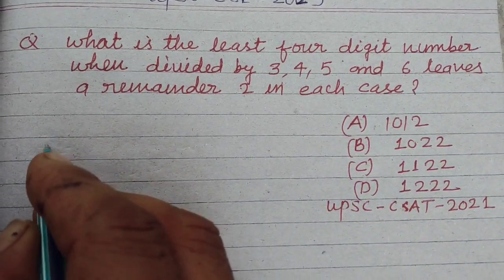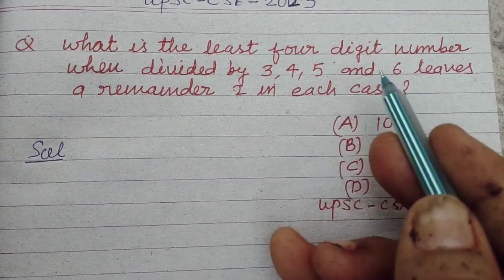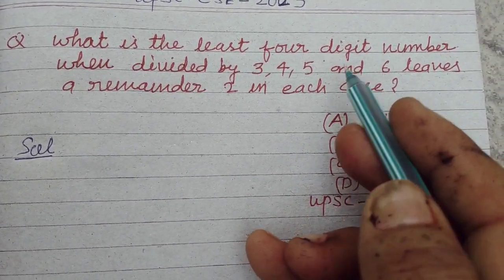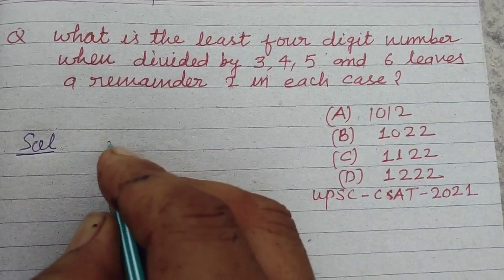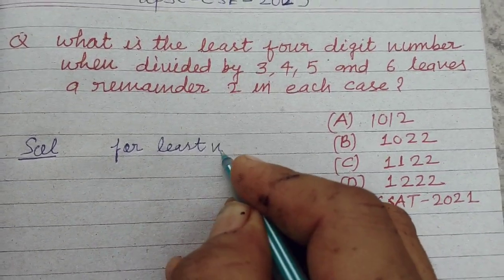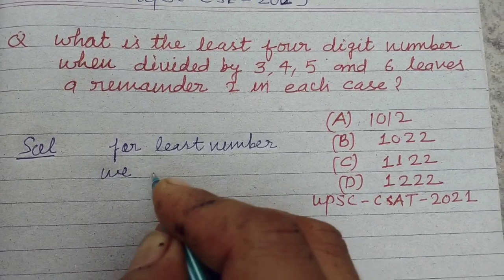So students, here the question is asking for the least number which is divisible by 3, 4, 5, and 6. For the least number we should take LCM.